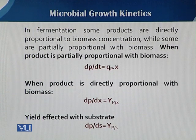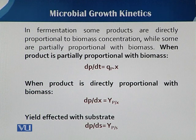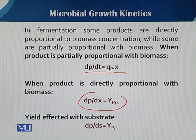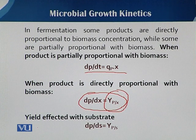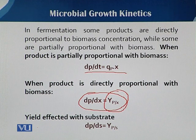In the next slide, you can see that in fermentation some products are directly proportional to biomass and some are only partially proportional to biomass. When the product is partially proportional to biomass, it can be written in one form; when the product is directly proportional to biomass, a different equation fits the relationship of product increase during fermentation. The yield coefficient with respect to substrate can also be written here — including yield with respect to product and biomass, and when the product is directly related to substrate, the yield Yp/s applies.